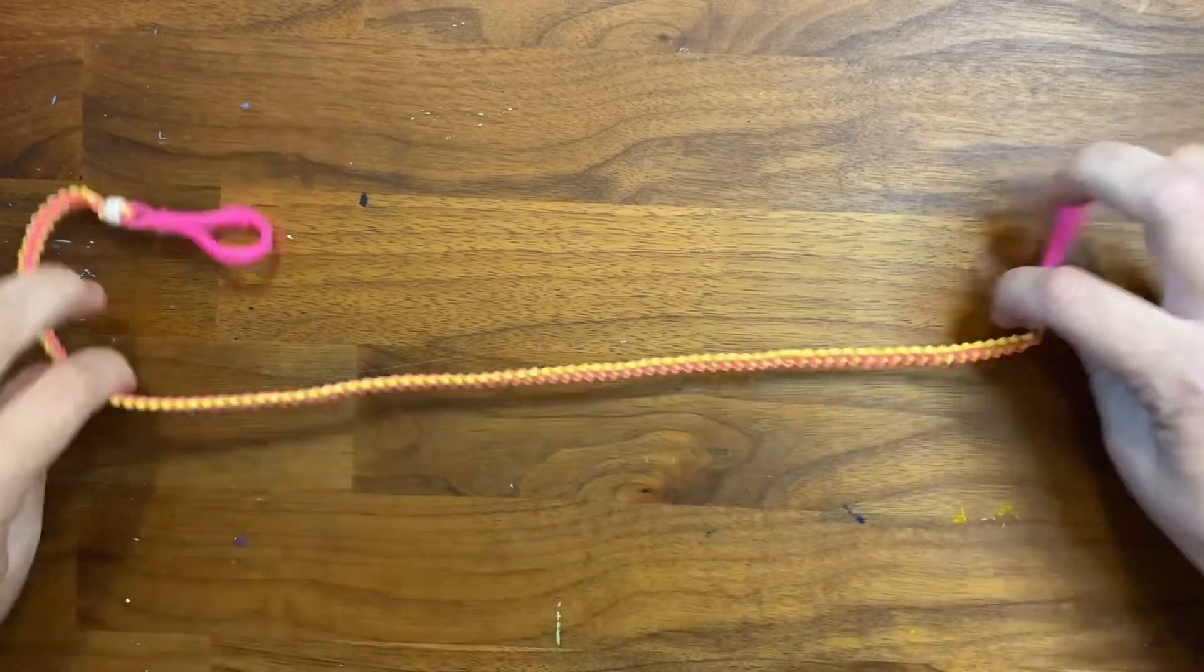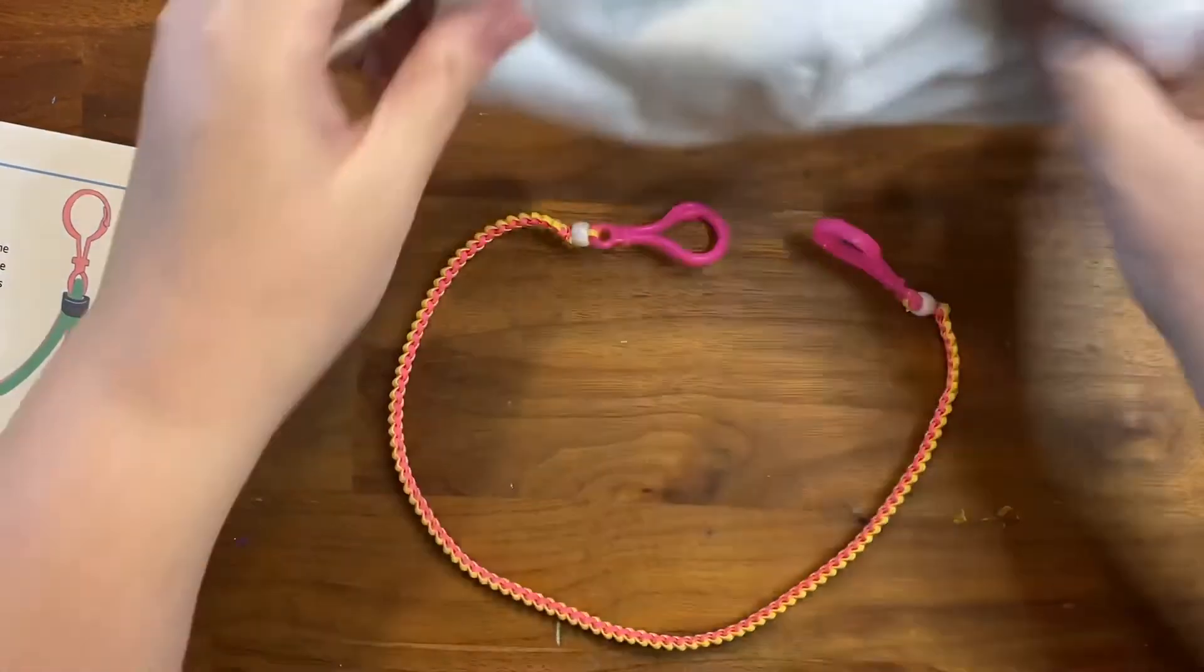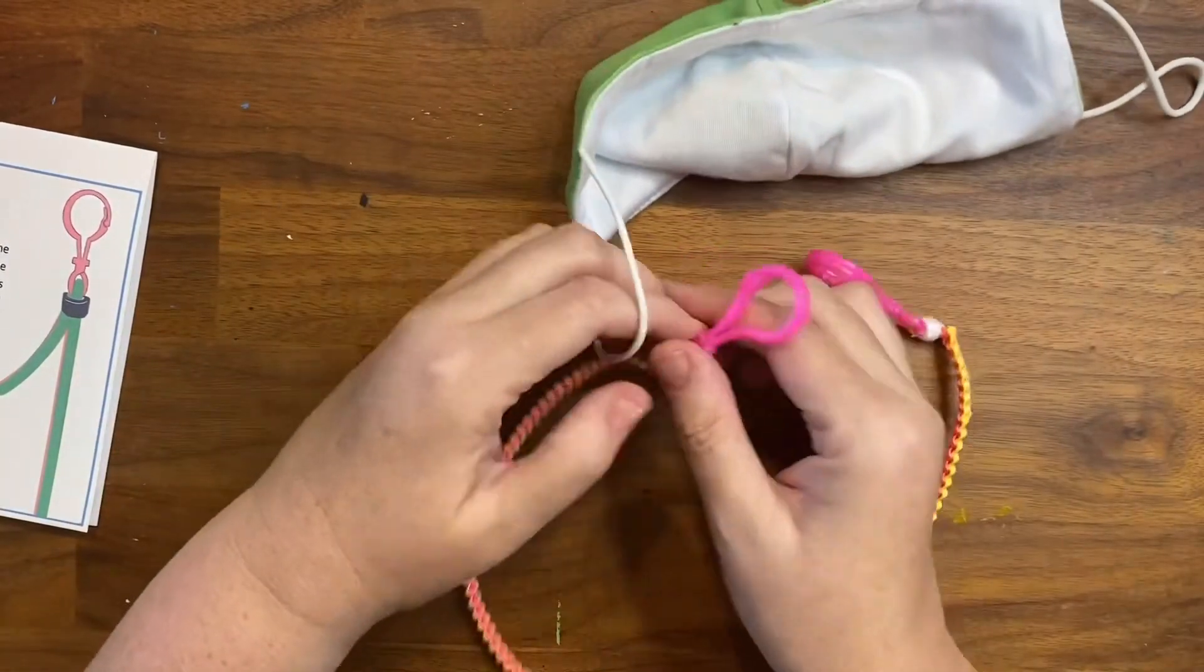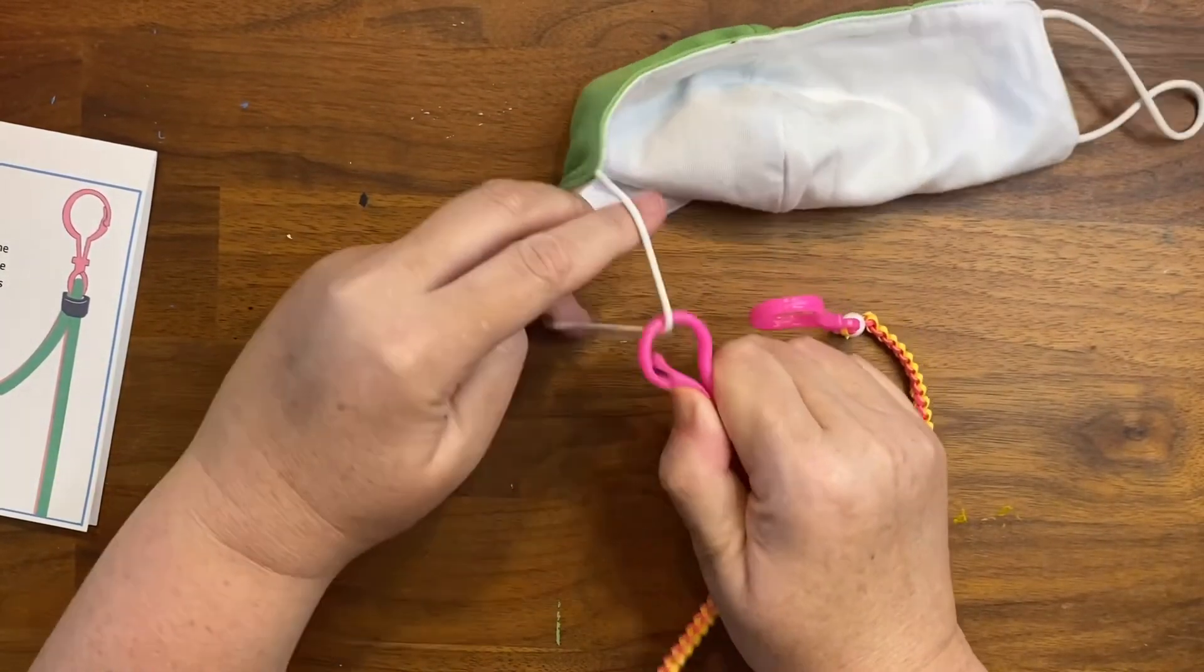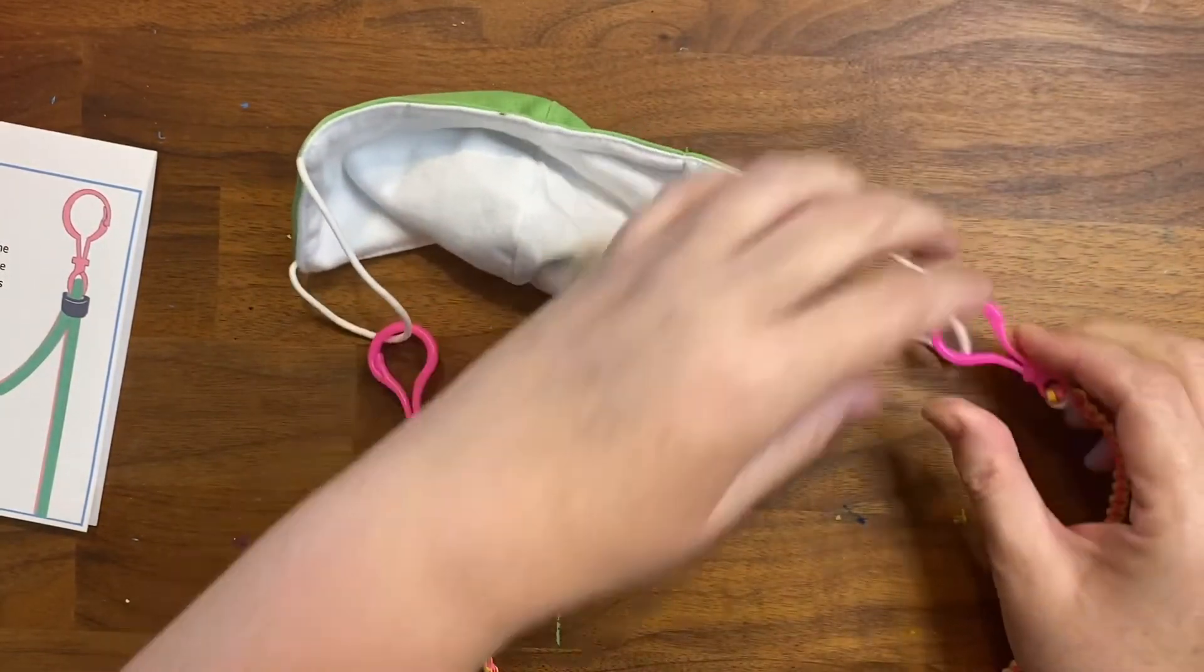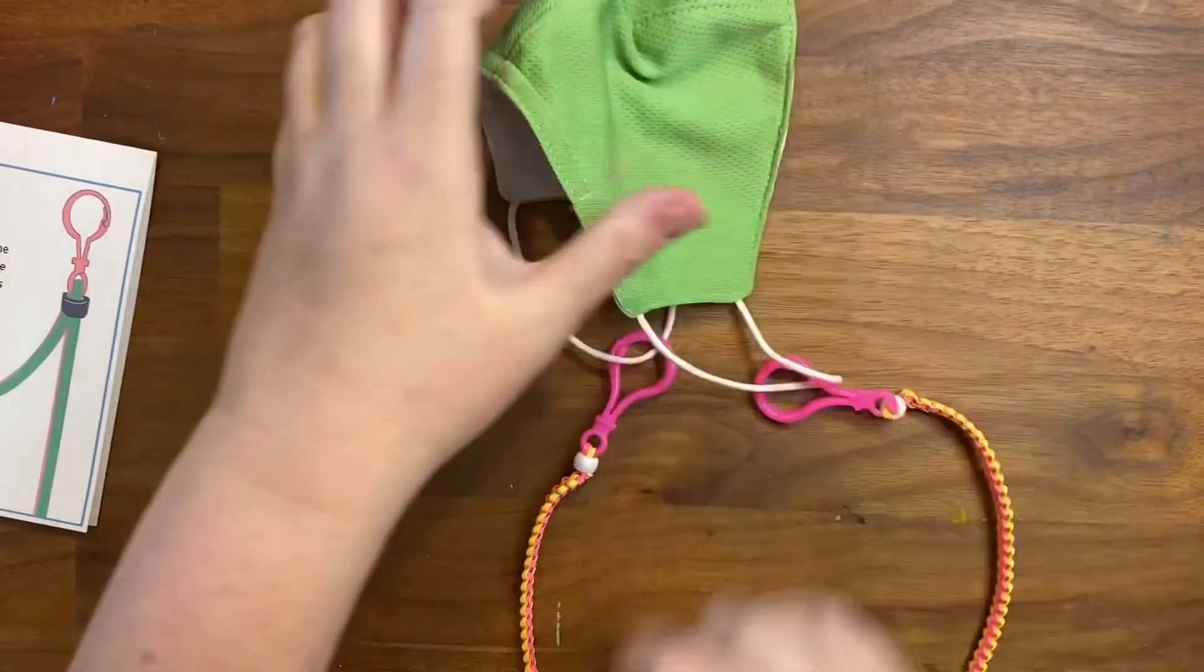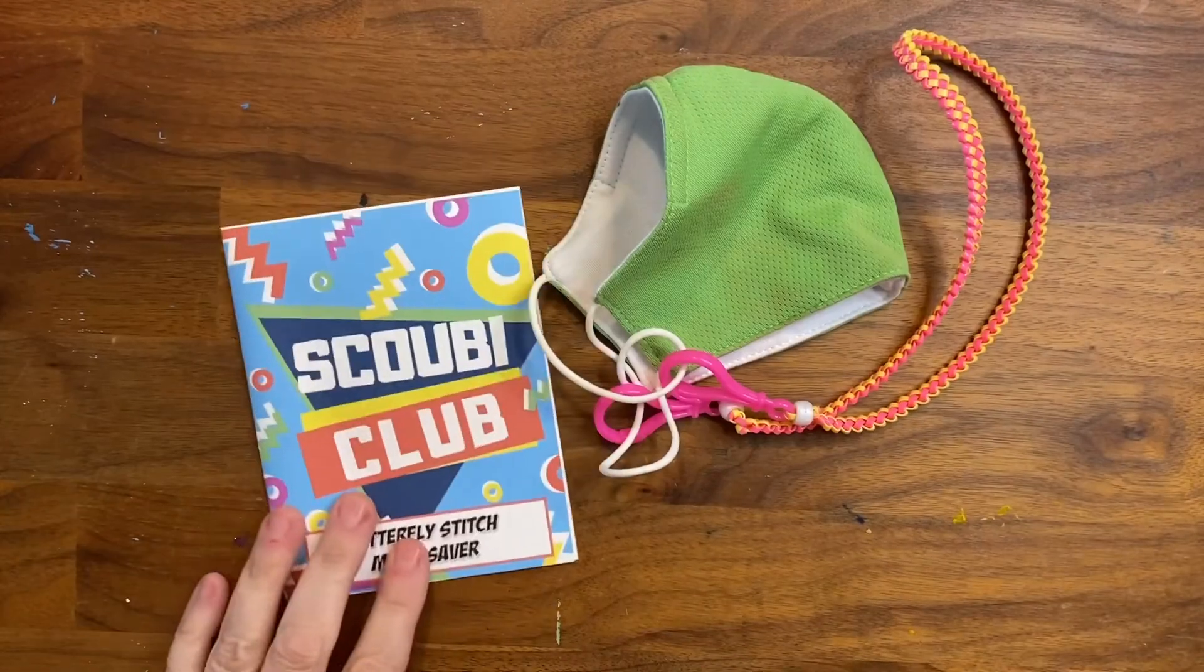All right so the project is done. If you'd like to use this to help with your mask you simply just put the clips onto the mask elastic or straps and then you can wear that around your neck to keep your mask secure. Thank you for watching.